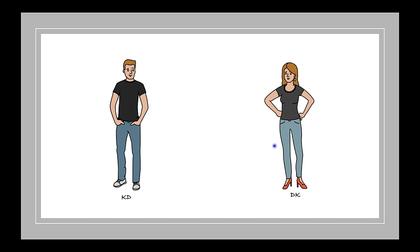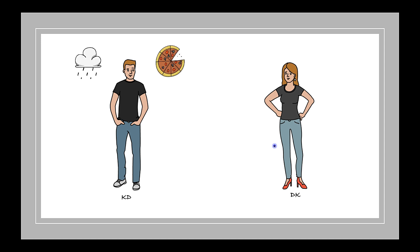How? She knew that Katie is a foodie person, so she started observing Katie's food choices. When it's a hot day, Katie asks for ice cream. When it's a rainy day, Katie asks for pizza.